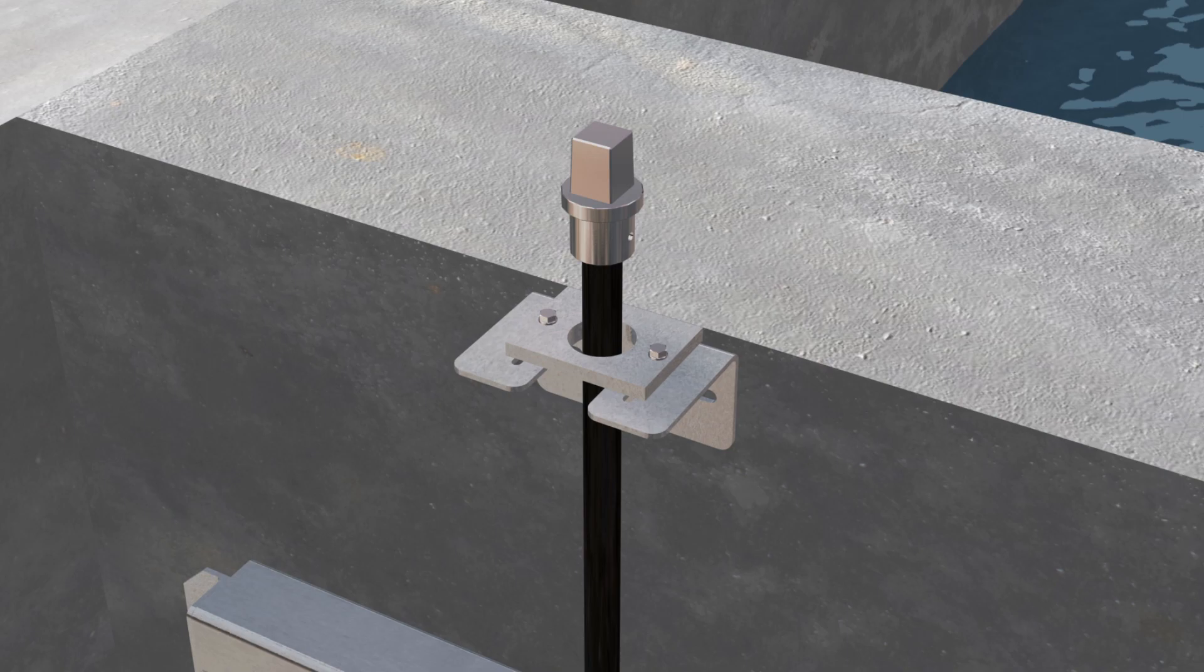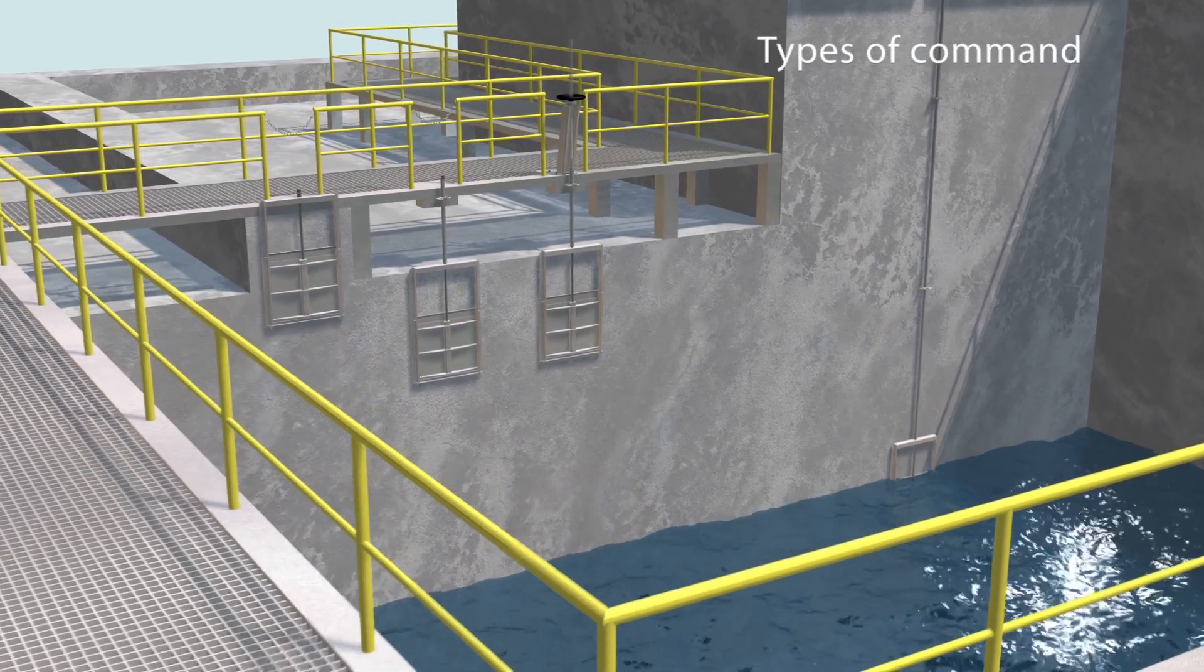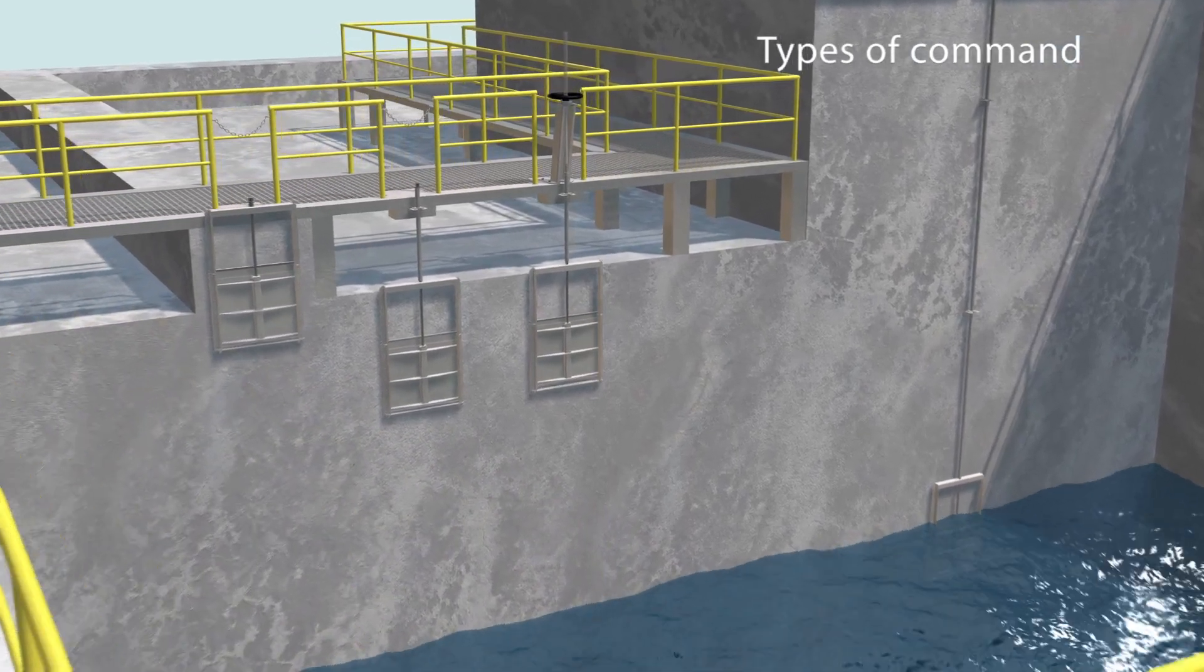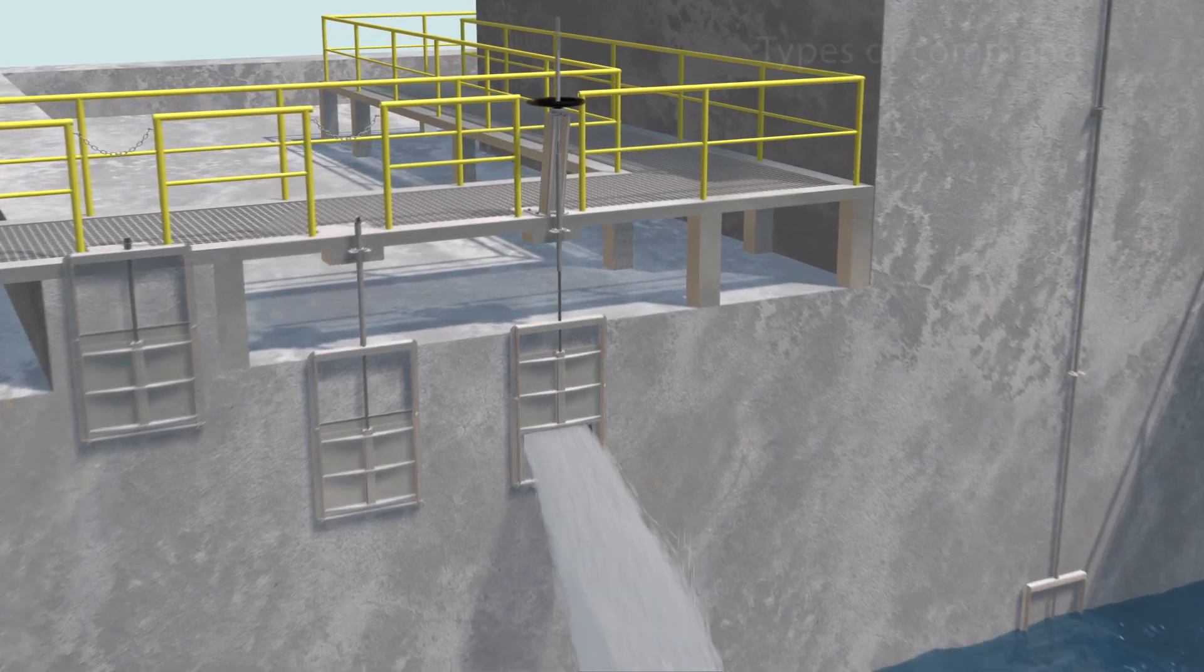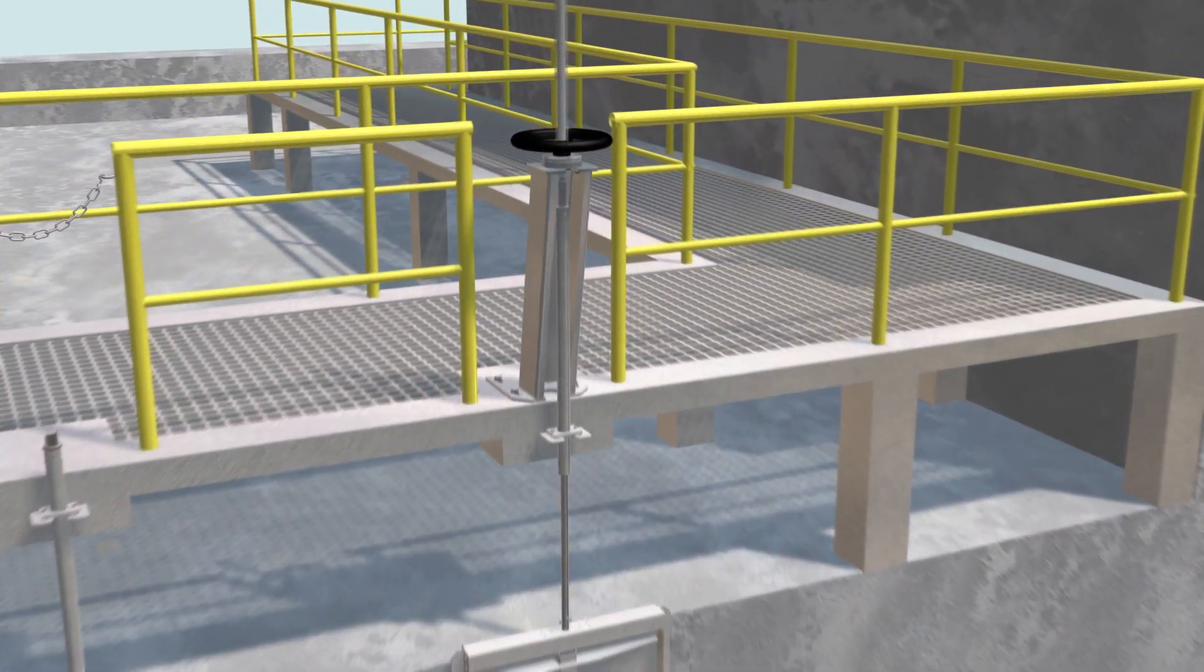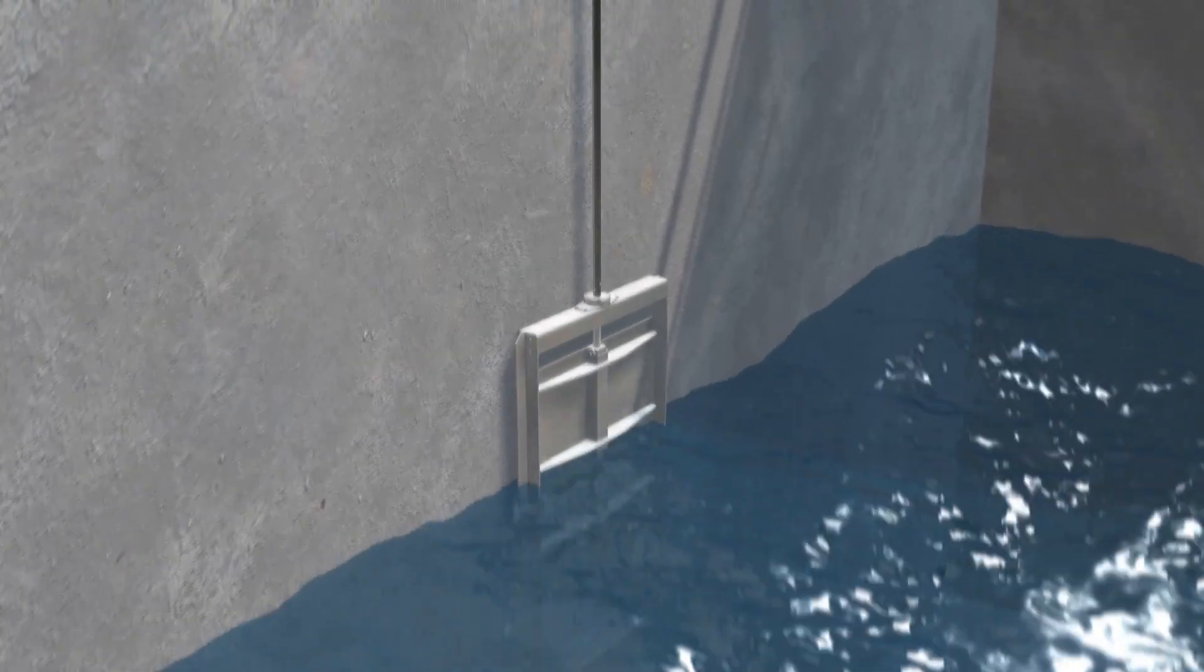Both sluice gates with rising stem and non-rising stem valves can be configured to be driven at different installation heights. The different types of command are direct connection, connection with extension leads, and steering column.